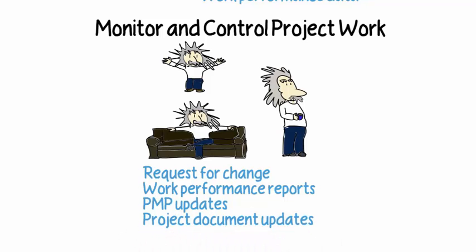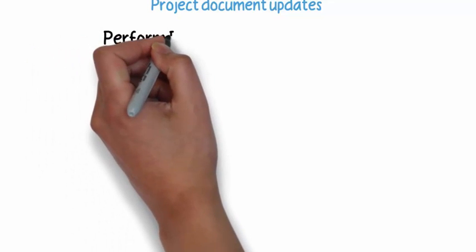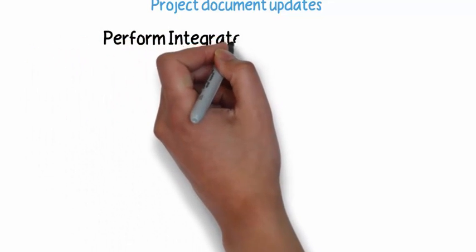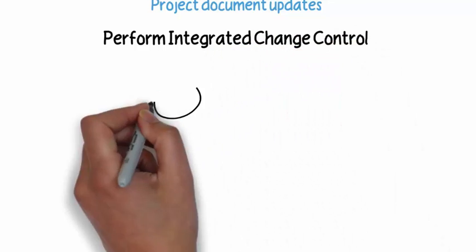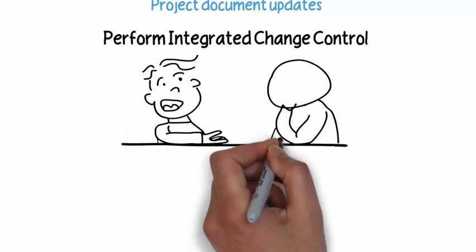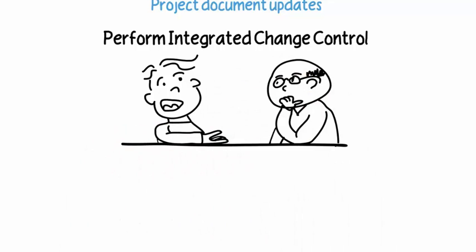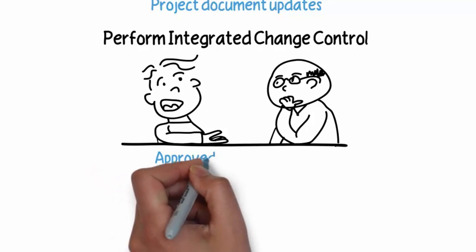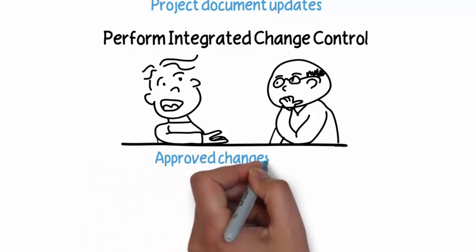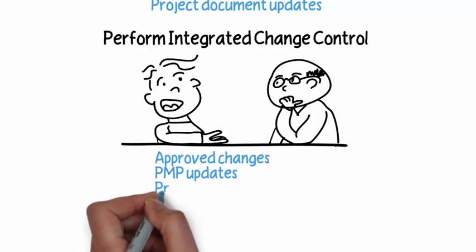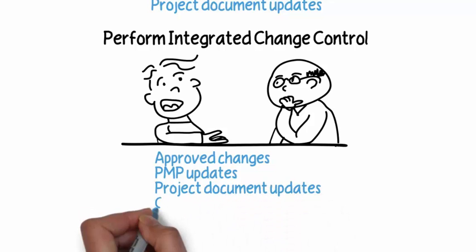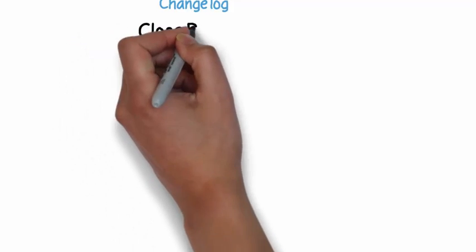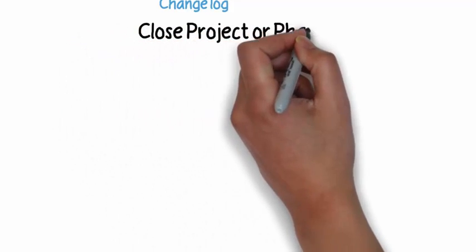The last process we're going to talk about in integration management — which sits in the monitoring and controlling process group — is perform integrated change control. Its outputs include looking at those changes and approving or denying them, updating the project plan and project documents as necessary, and maintaining an updated change log.